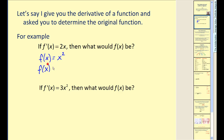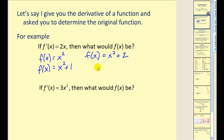For example, f of x equal to x squared plus one, or f of x equal to x squared plus two, because we know the derivative of a constant is zero. So in fact, there would be an infinite number of functions that have the derivative equal to two x.